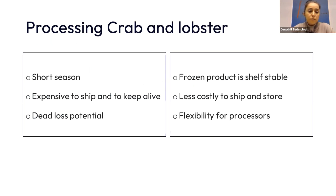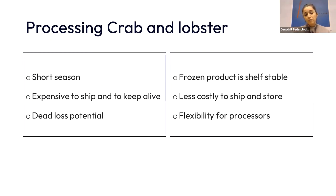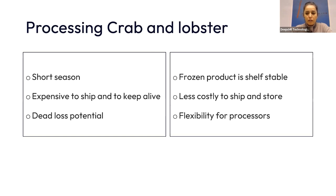Both crab and lobster are very high-value proteins, typically distributed frozen. There are good reasons for that: they have a very short season to catch and distribute them live — usually just a few weeks or months, not year-round. It's expensive to ship and keep them alive, and there's dead loss potential. On the other hand, frozen product is shelf-stable, less costly to ship and store at the point of distribution.